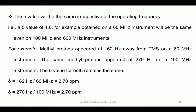For example, a methyl proton appeared at 162 Hz away from TMS on a 60 MHz instrument, and the same methyl protons appeared at 270 Hz on a 100 MHz instrument. Delta equals 162/60 = 2.7 PPM; and 270/100 = 2.7 PPM. Whatever the operating frequency, the delta value remains the same.